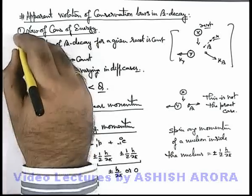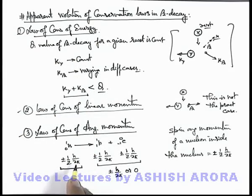So these are the three fundamental laws which were assumed that these are not holding true in case of beta emission. But later it was explained in a different way that we'll study in coming sections.